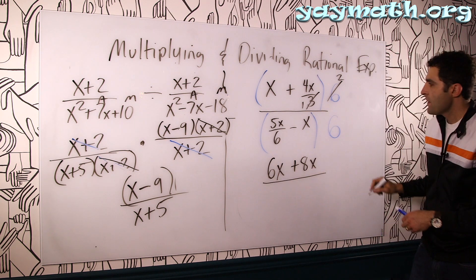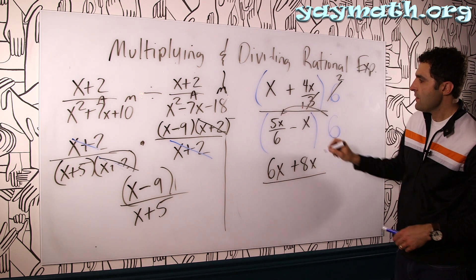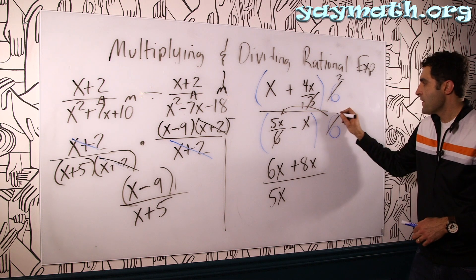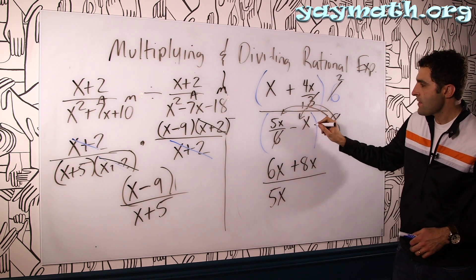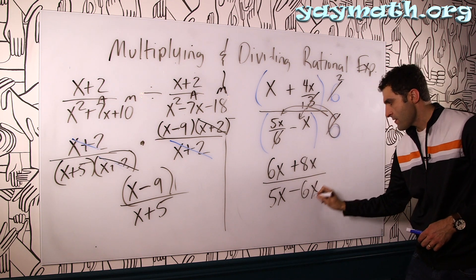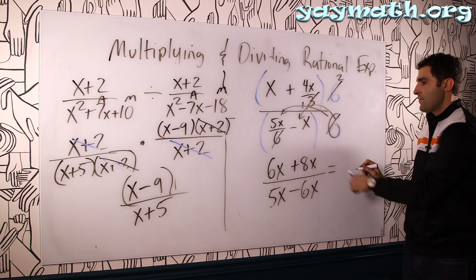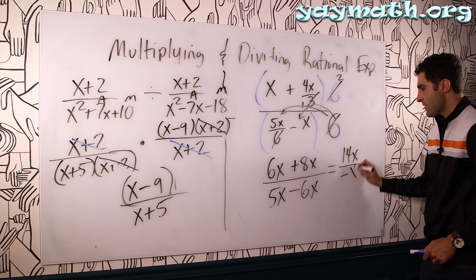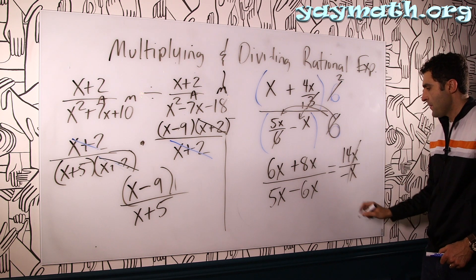All over, 6 distributing over here, those 6s would cancel. That leaves you 5X. And then the 6 distributing to minus X is minus 6X. This becomes 14X over negative X. Cancels. And we get negative 14.